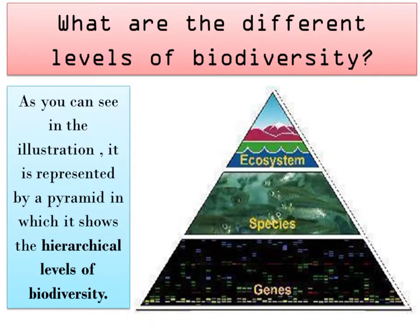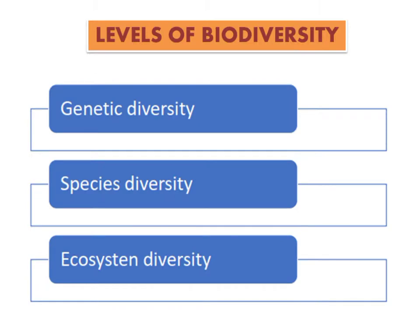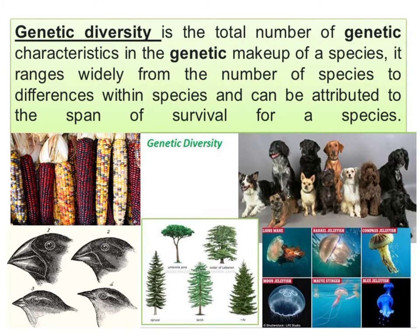As you can see in the illustration, biodiversity is represented by a pyramid showing hierarchical levels. The levels of biodiversity are genetic biodiversity, species biodiversity, and ecosystem biodiversity. Genetic diversity is the total number of genetic characteristics in the genetic makeup of a species. It ranges widely and can be attributed to the span of survival for a species.